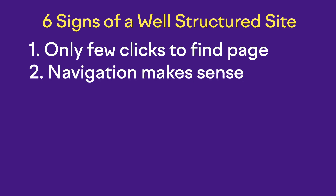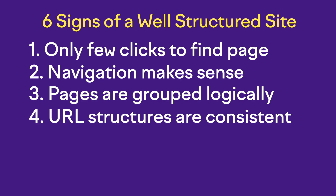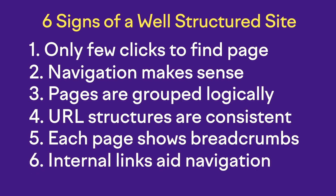Second, navigation menus make sense and improve the user experience. Third, pages and content are grouped topically and in a logical way. Fourth, URL structures are consistent. Fifth, each page shows breadcrumbs — you have a few types of breadcrumbs to choose from, but the point is to help website users see how they've navigated to the page that they're on. Sixth, internal links help users make their way through the site in an organic way.